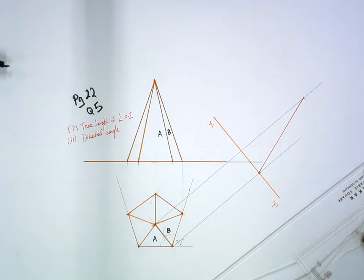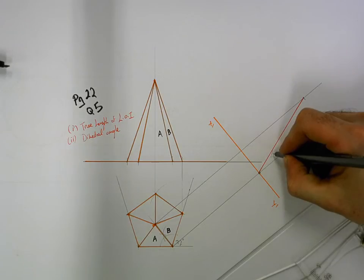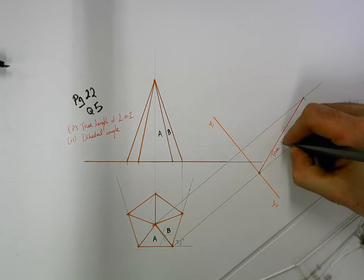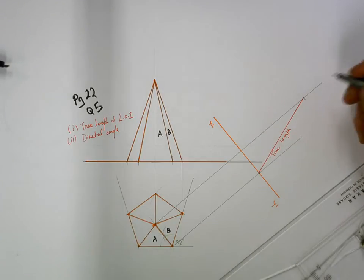Now that's part of the question answered, so just make sure you make it obvious to the examiner. Label what you've just done. So I would label that as true length.